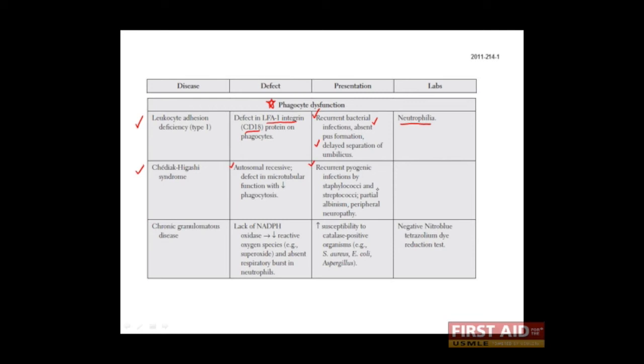These patients also have partial albinism, and that's because the deposition of pigments like melanin require microtubules for their transport. These patients can also have peripheral neuropathy, and again, this has something to do with microtubule transport, which is critical in neurons.